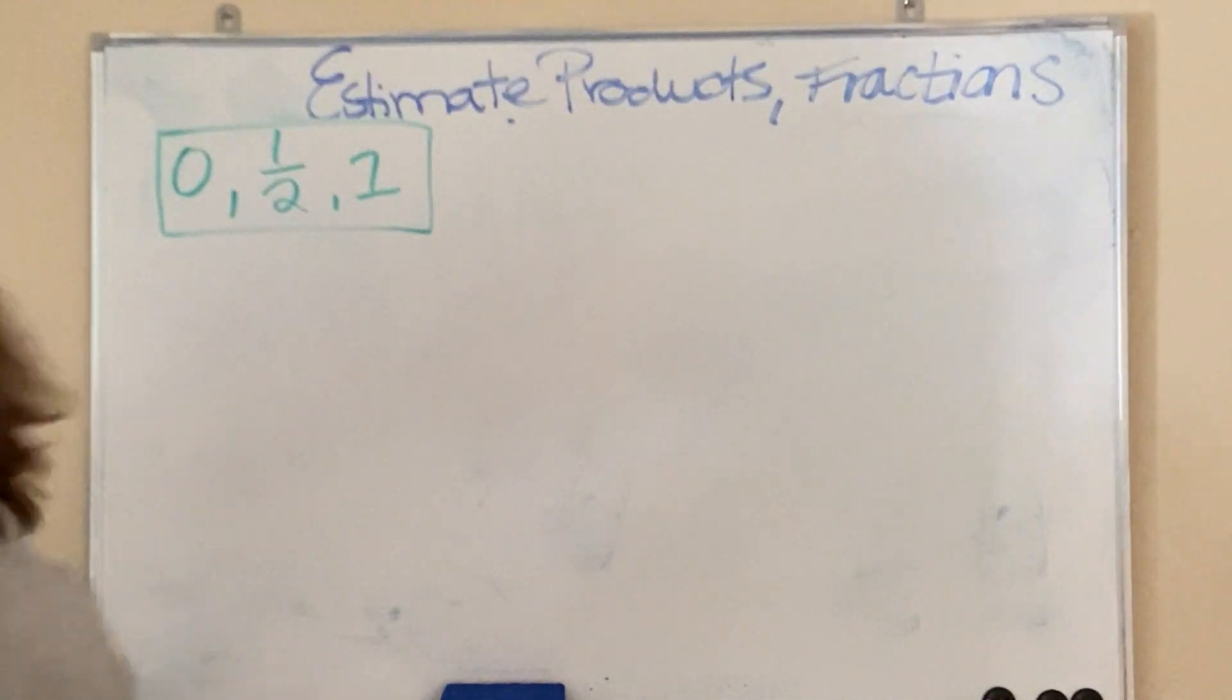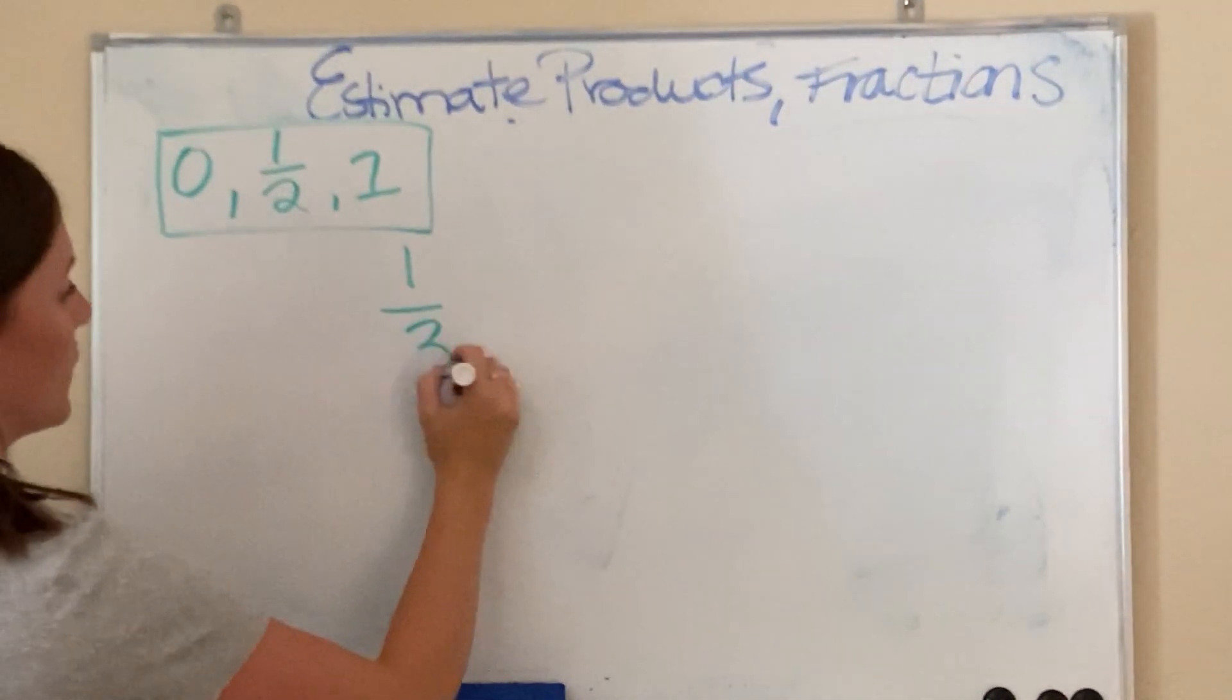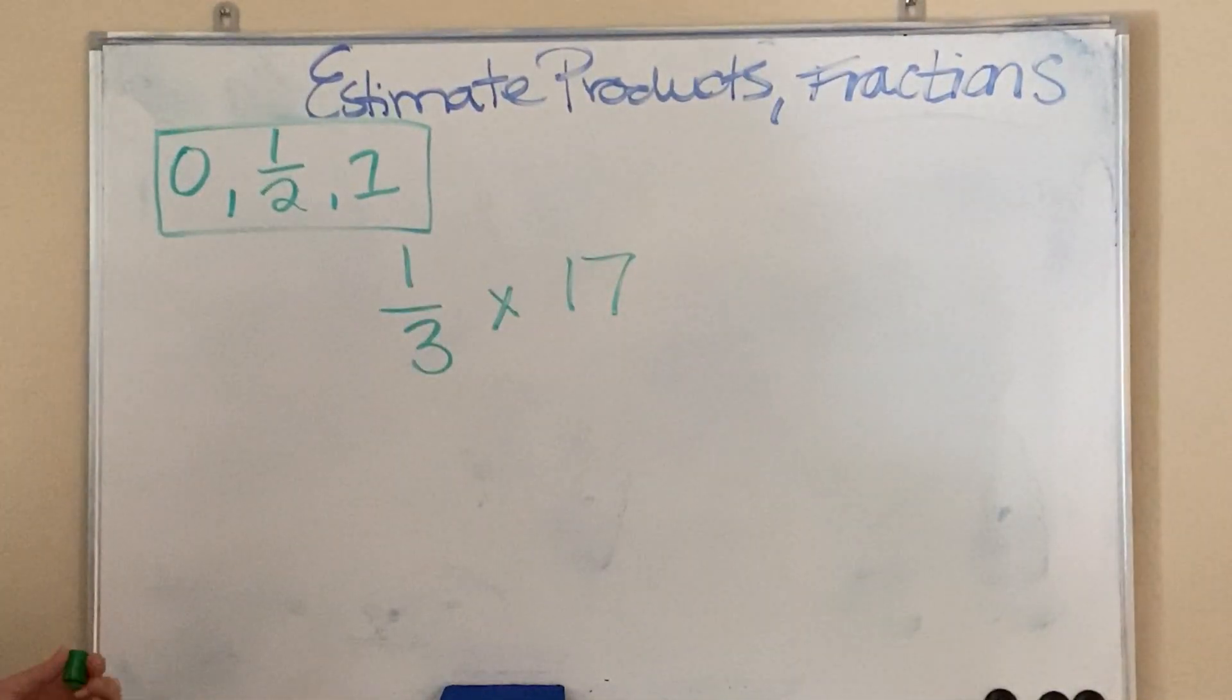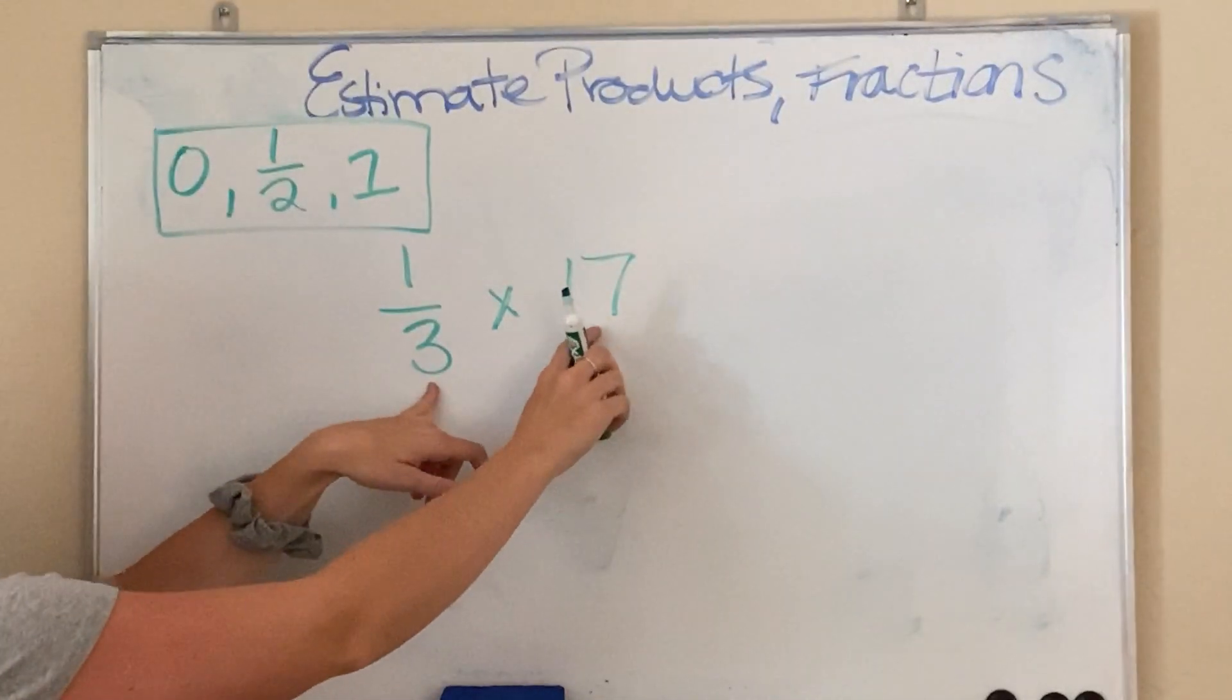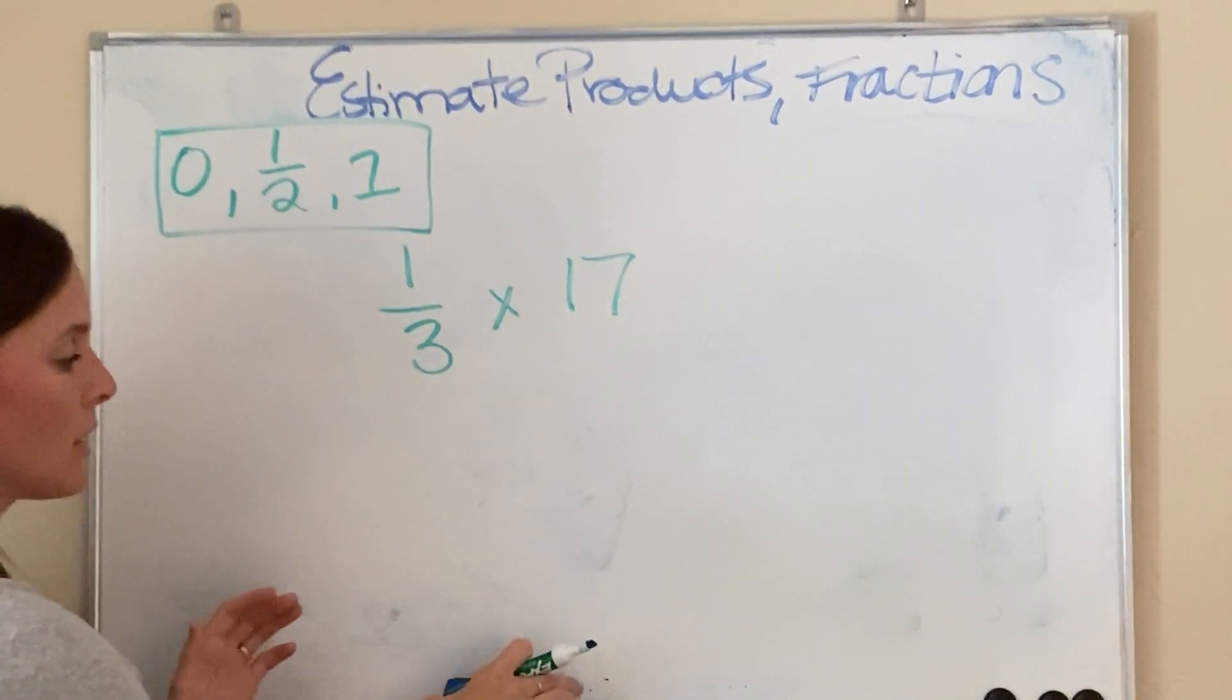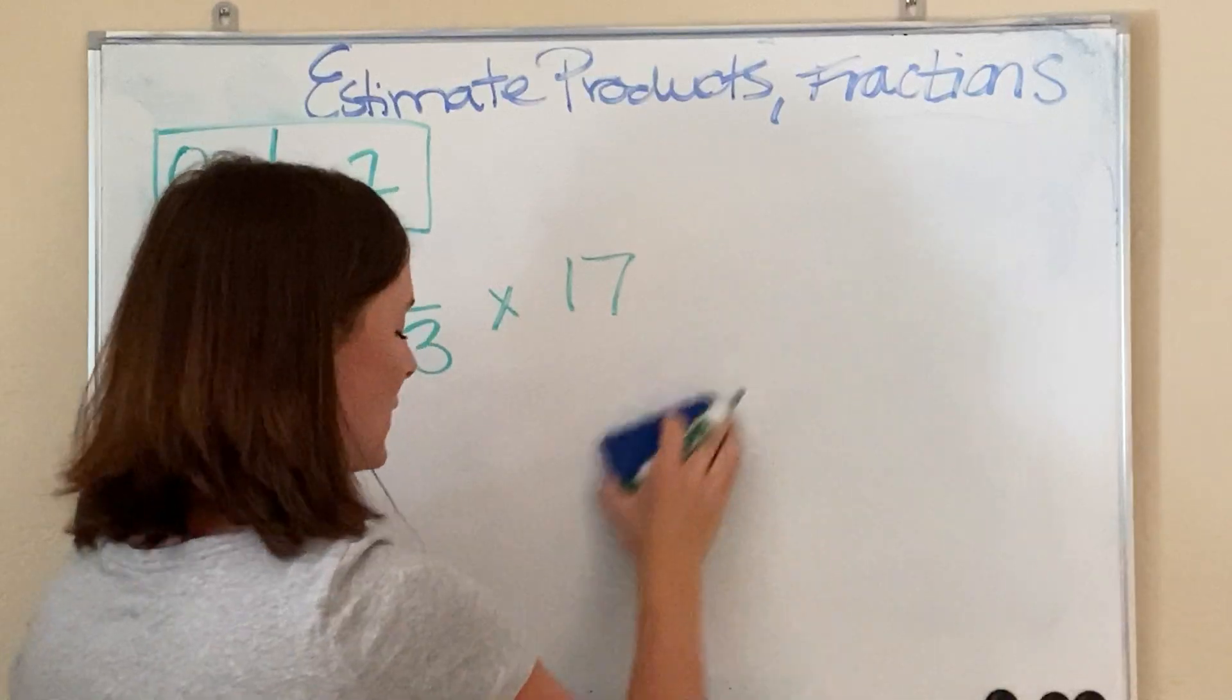Let's say we have the following equation: 1/3 times 17. Now, in order to multiply, like we did in Lesson 1, we had fact families here. It was easy for us to divide these two numbers and get an even amount in each box, right? So, we need to do the same.